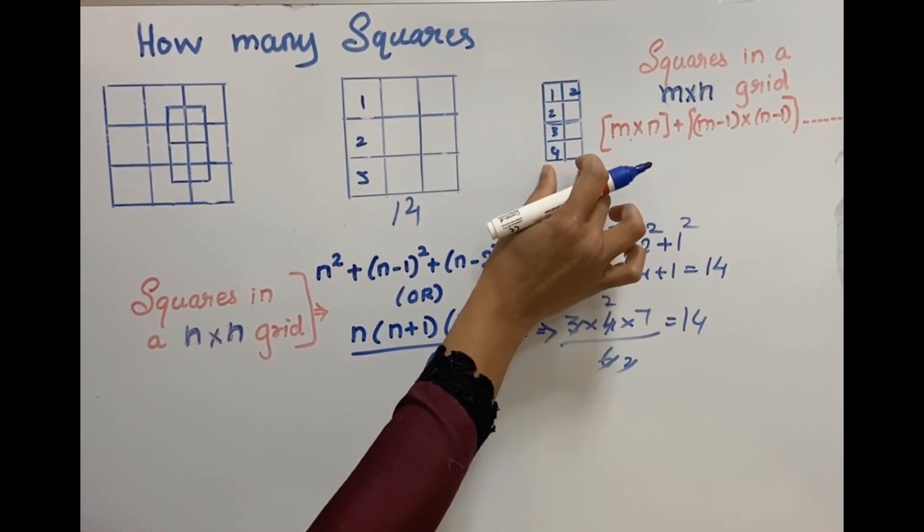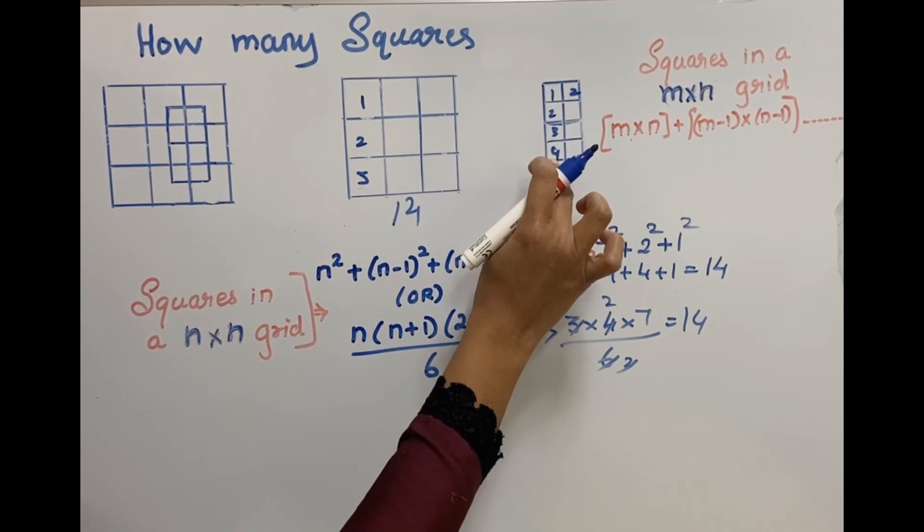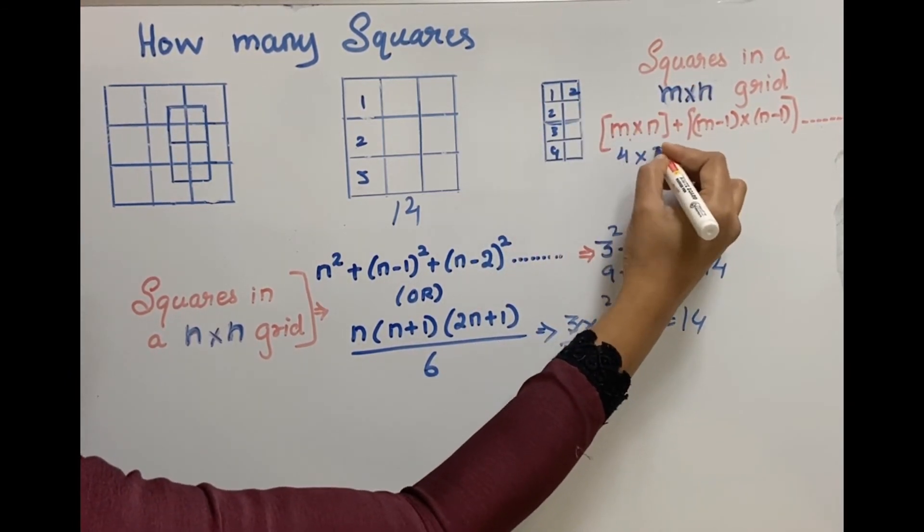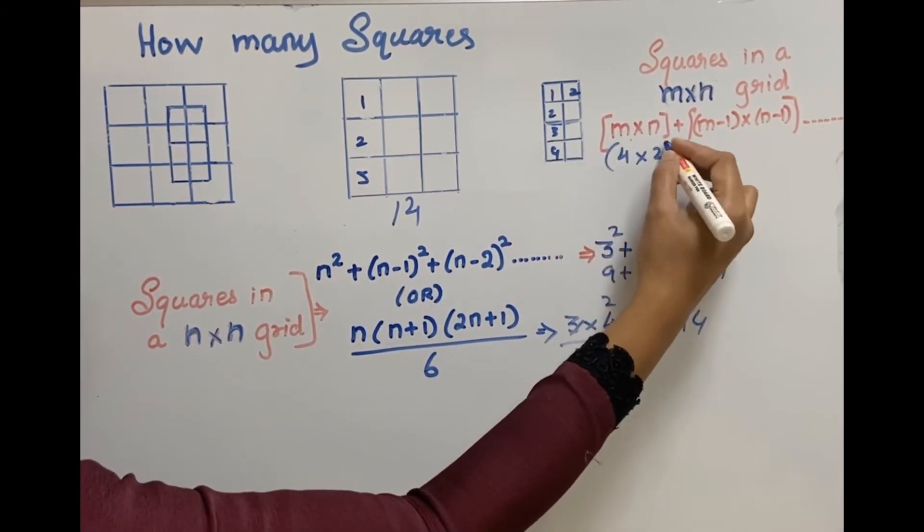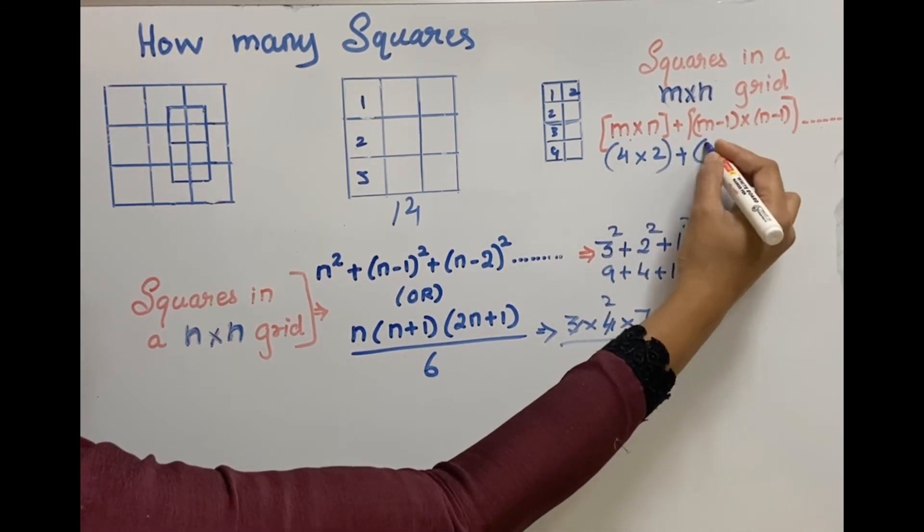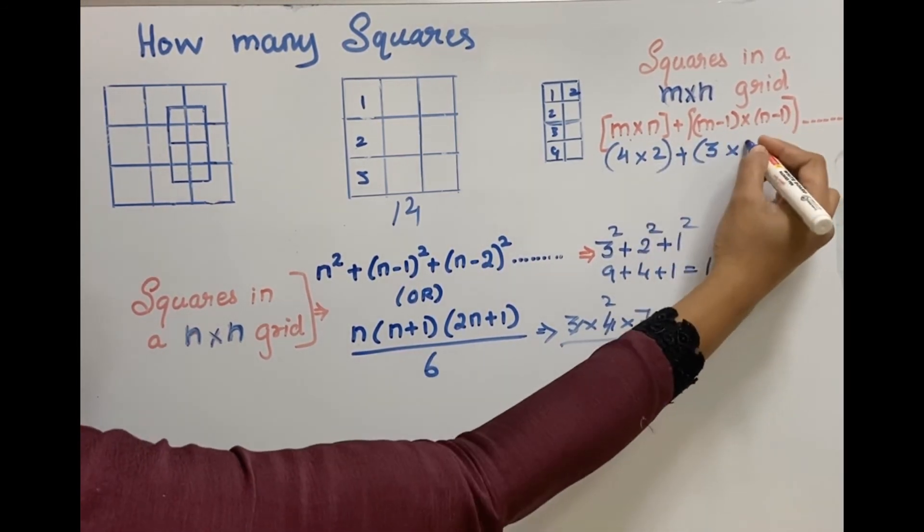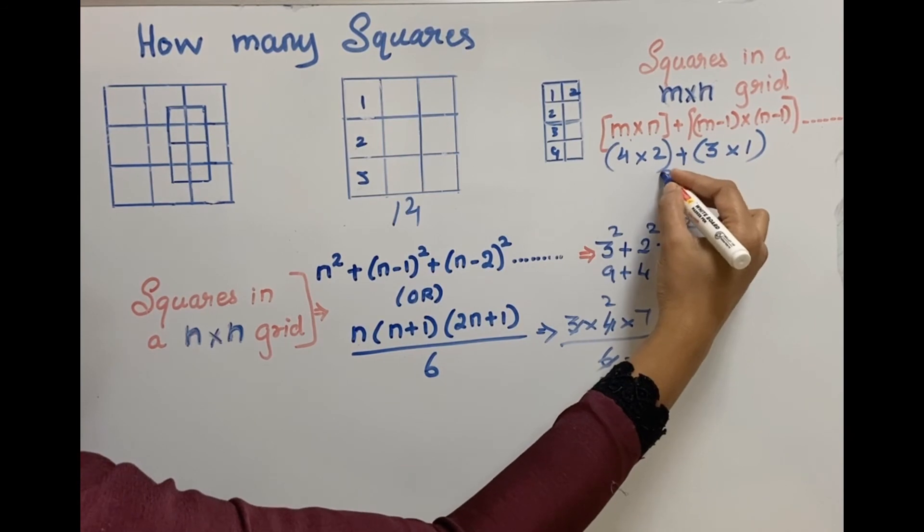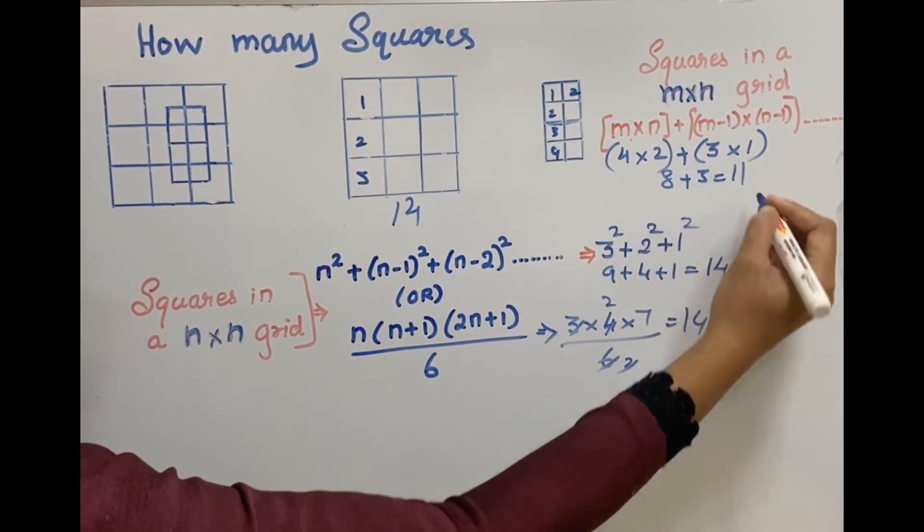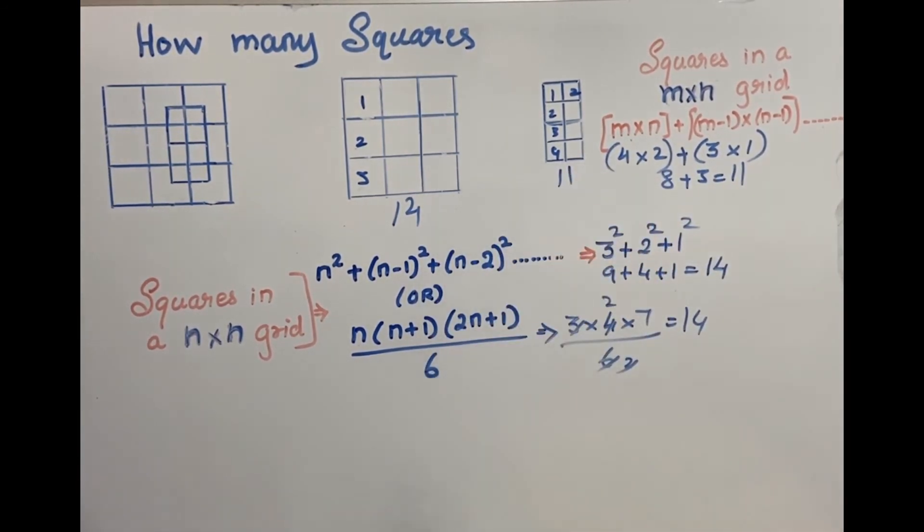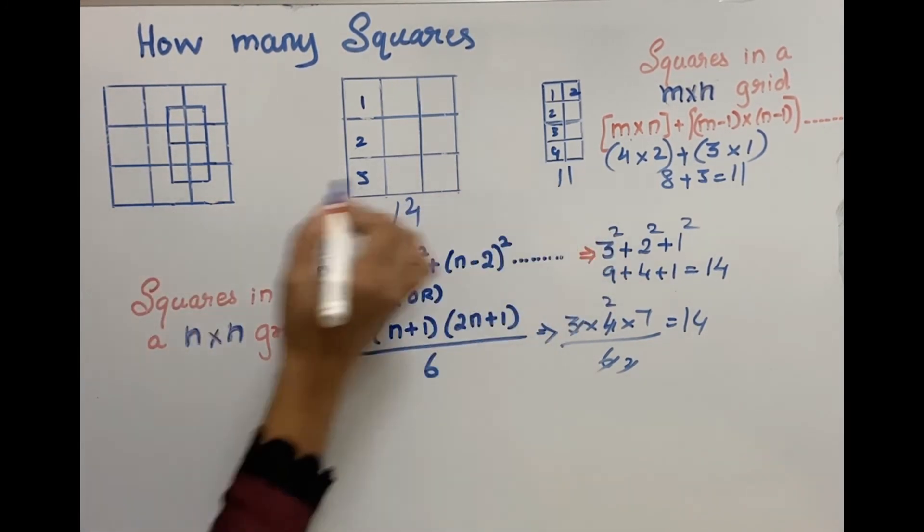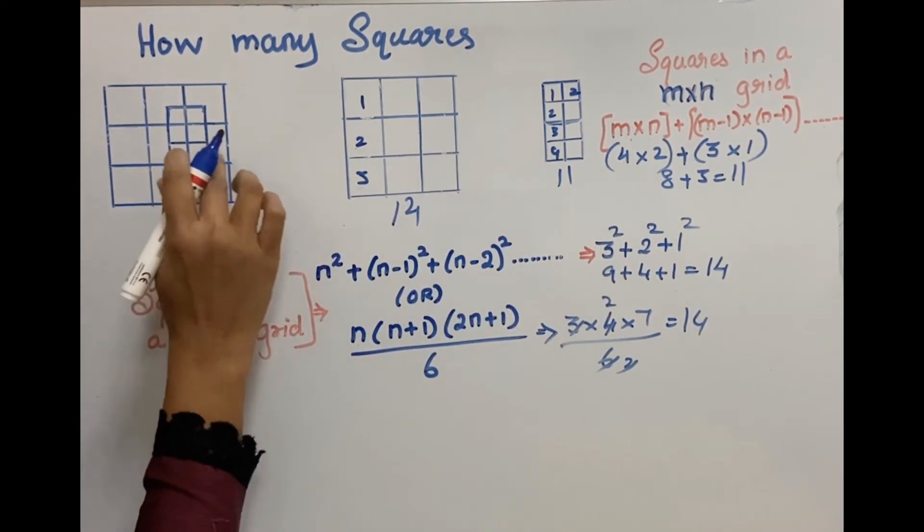Then the inner part, inner part, it's m is 4 and n is 2. So 4 into 2 plus, next m minus 1, then n minus 1. So the answer will be 11. So here in this, 11 squares. The summation of these two, 14 plus 11, 25 squares in this.